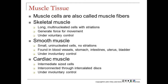Muscle tissue is one of the four tissue types. Muscle cells are sometimes called muscle fibers because they're very long. There are three types: skeletal, smooth, and cardiac. Skeletal muscle cells are very long, multinucleate, and have striations or stripes. They generate voluntary movement — you choose to lift your arm or kick your leg. Smooth muscles are involuntary, small, have one nucleus, and lack striations. They are found in blood vessels, the stomach, intestines, uterus, and bladder.